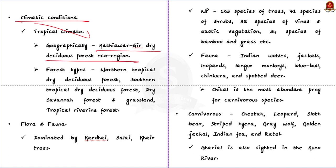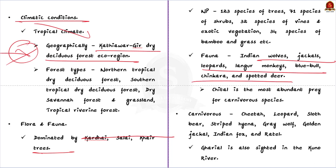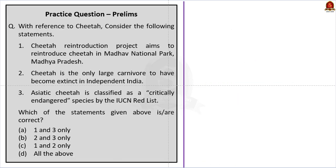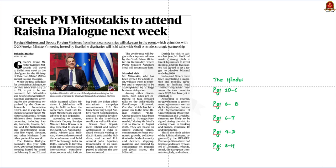Geographically, the area falls under the Kathiawar-Gir dry deciduous forest ecoregion. The flora is mainly dominated by Kardai, Salai, and Kadam trees. In terms of faunal diversity, Kuno National Park is home to Indian wolves, jackals, leopards, Chinkara, and spotted deer. Cheetal is the most abundant prey species for carnivorous animals. The Gharial is also sighted along the Kuno River. Let's move on to the next article.